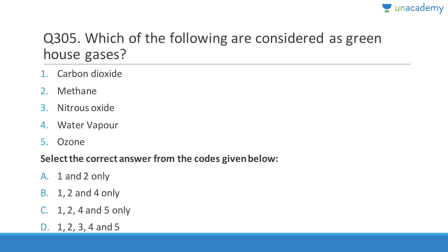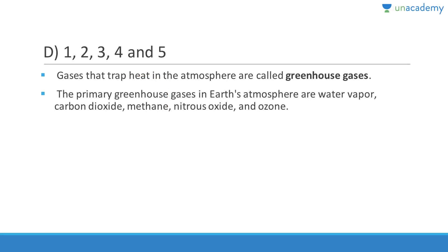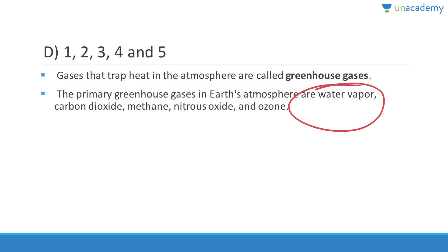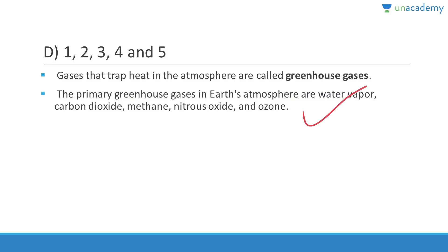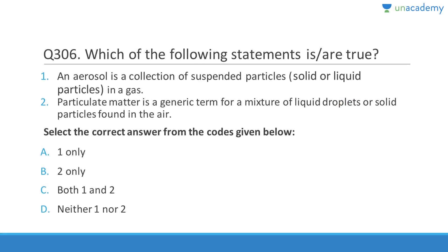Question 305: Greenhouse gases include carbon dioxide, methane, nitrous oxide, water vapor, and ozone — all five are greenhouse gases. Answer is D (1,2,3,4,5). Gases that trap heat in the atmosphere are called greenhouse gases. The primary greenhouse gases in Earth's atmosphere are water vapor, CO2, methane, nitrous oxide, and ozone.